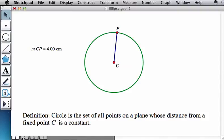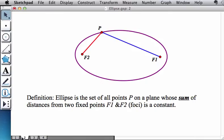Now let's study what the definition of an ellipse is. An ellipse is a collection of all points P on the plane whose sum of distances from two fixed points, F1 and F2, called the foci, is a constant. So the set of all points P on a plane whose sum of distances from two fixed points F1 and F2 is a constant.